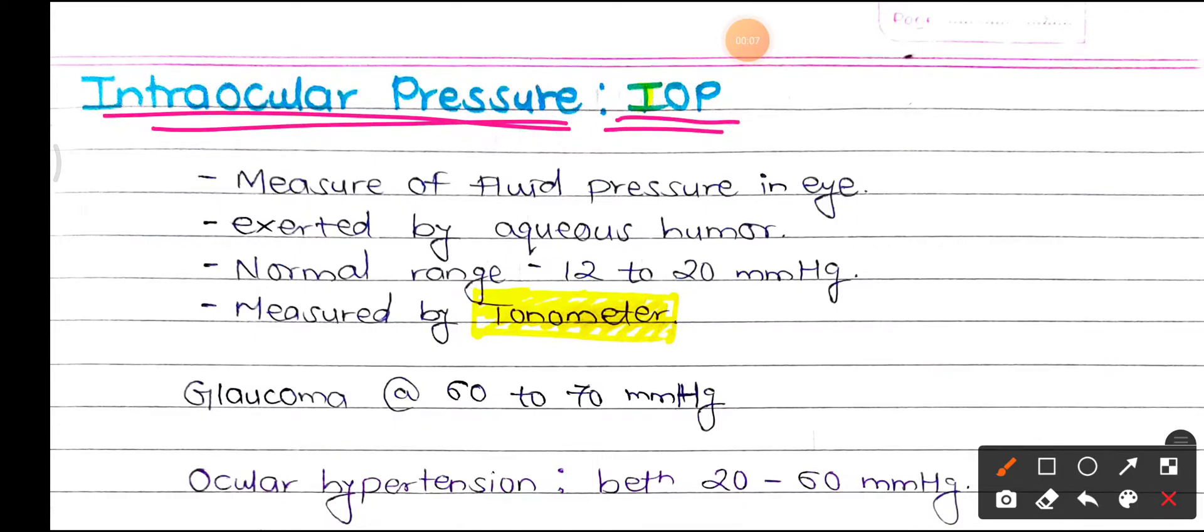The IOP or intraocular pressure is the measure of fluid pressure inside our eye, and it is the pressure exerted by the aqueous humor on the vitreous chamber.